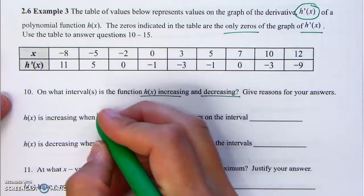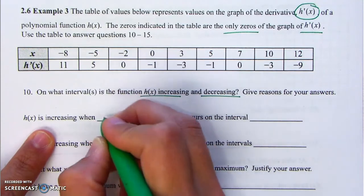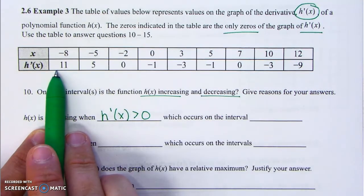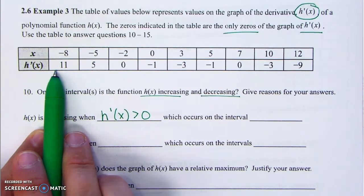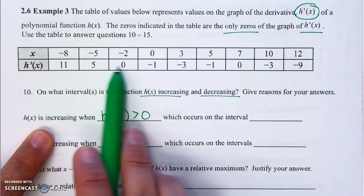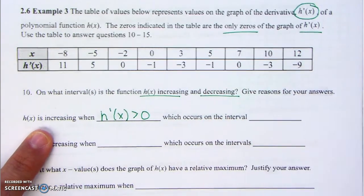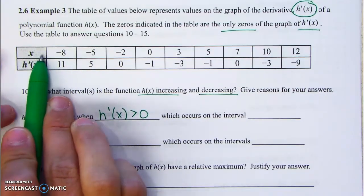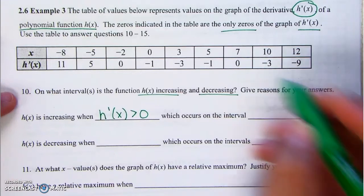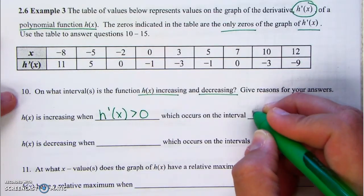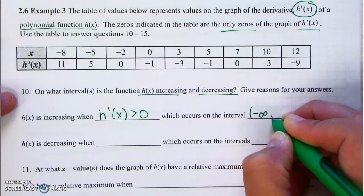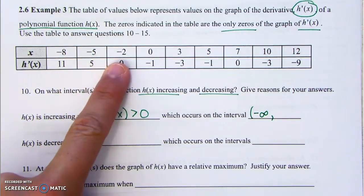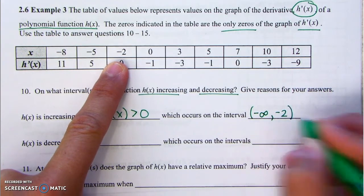On what intervals is the function h increasing and decreasing? Give reasons for your answer. h is increasing when the derivative is positive. We're starting from negative infinity since it's a polynomial function going from negative infinity to positive infinity. The derivative is positive from negative infinity to negative 2 — we don't include negative 2 because the derivative is 0 there.